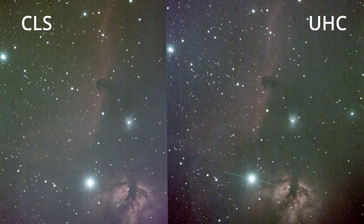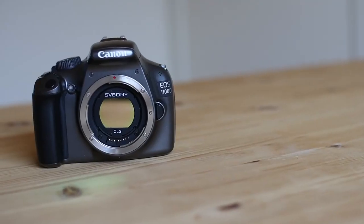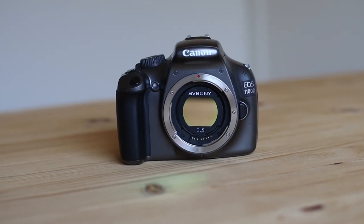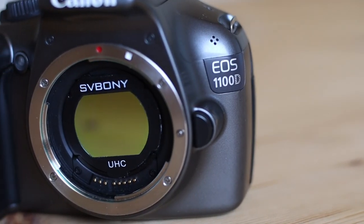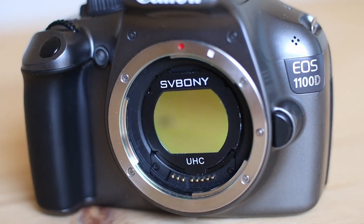That said, both CLS and UHC filters do a great job. In the end, if you want something that is an all-rounder — if you want to take photos of galaxies, Milky Way, and nebulas — you should go for the CLS filter. But if, like me, you primarily take photos of nebulas, then UHC will perform better.